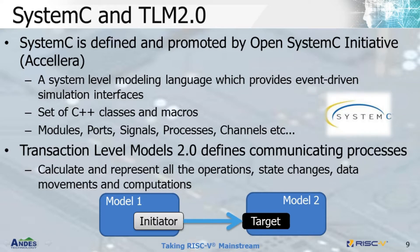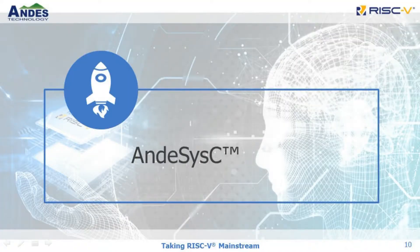In TLM, it calculates and represents all the operations, state changes, data movements, and computation, emphasizing the functionality of the data transfer — especially what data are transferred to and from what location — rather than the actual implementation of the physical protocol. For example, the initiator is the one that will transfer data to the target, and this is independent from the detailed implementation of physical signals. For NDIS, besides our C simulation engine, NDSim will also provide a SystemC simulation model, ND6C, for our customers to build their virtual prototype.